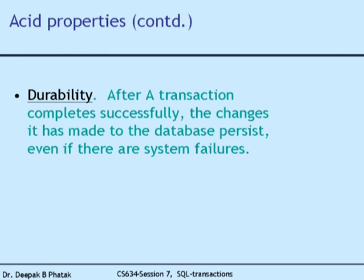Durability is the last of the ACID properties. After a transaction completes successfully, the changes it has made to the database persist even if there are system failures afterwards. Durability is theoretically forever — once the database is updated and the transaction is committed, whatever the consistent database state is, the changes are durable unless changed by some other transaction. Even the backup and restoration of the backup database must preserve that consistent data.